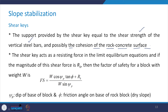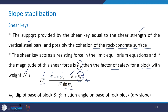These shear keys act as a resisting force in the limit equilibrium equations. If the magnitude of this shear force is represented by Rk, then the factor of safety of a block with weight W is given as: F = (W cos ψp · tan φ + Rk) / (W sin ψp). If the shear key is not there, the term Rk will not be present in this expression. In the presence of the shear key and Rk in the numerator, the value of the factor of safety is enhanced, resulting in better stability of the rock slope.